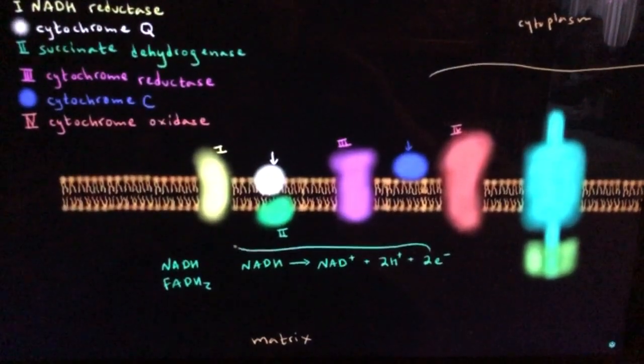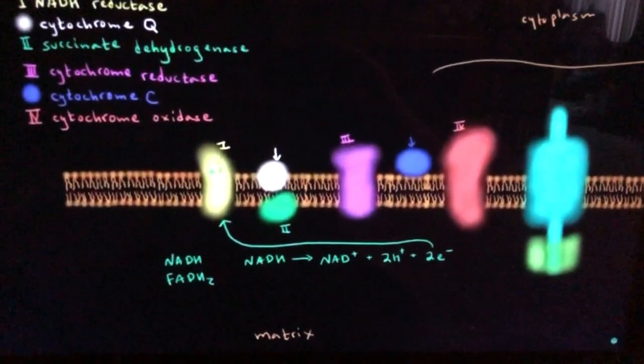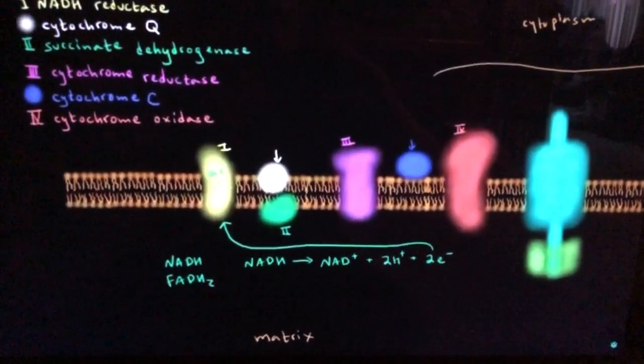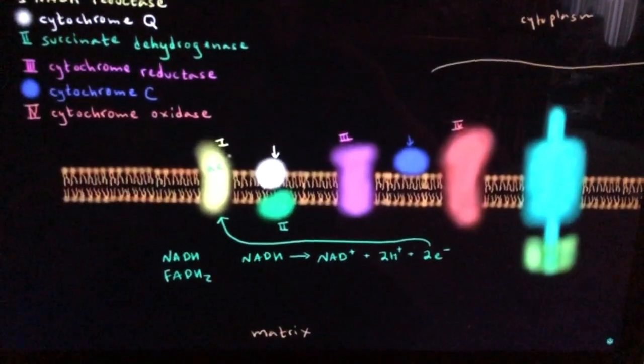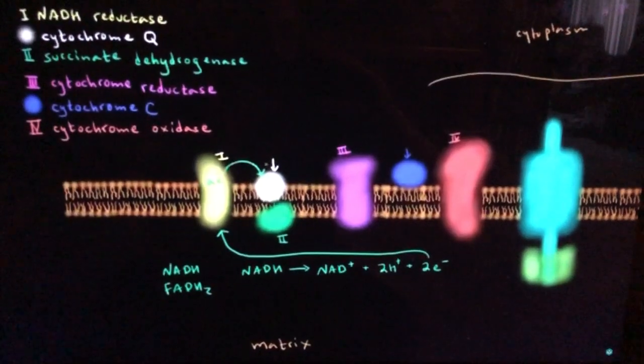And those 2 electrons are going to go on to enzyme number 1. So while NADH lost electrons and got oxidized, the first enzyme gained electrons or it got reduced. But enzyme 1 is not going to hold on to the electrons. It's going to pass them on to the next enzyme, which is cytochrome Q.